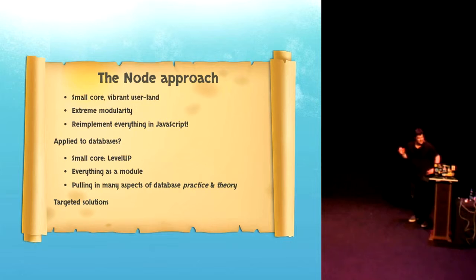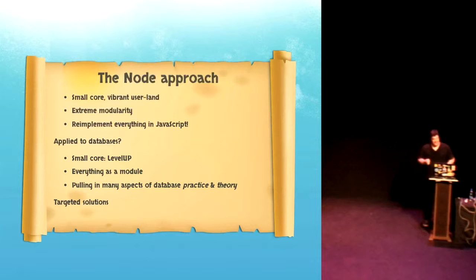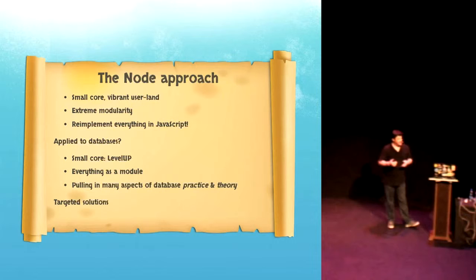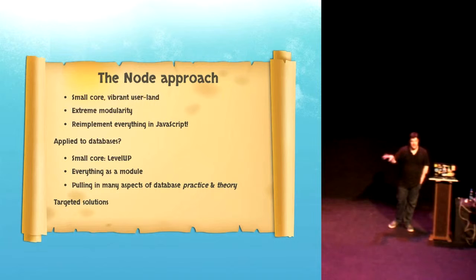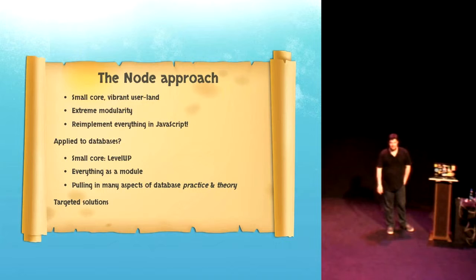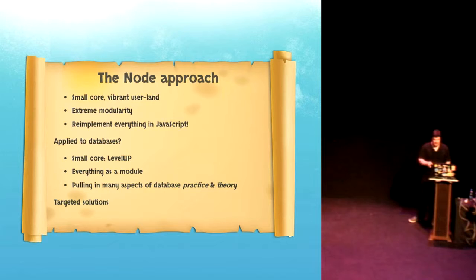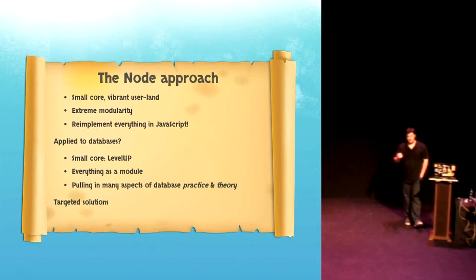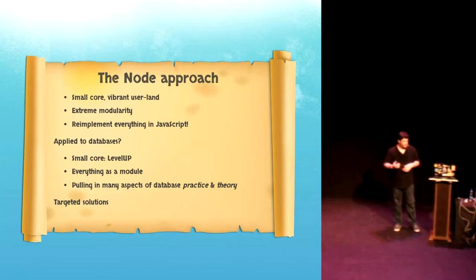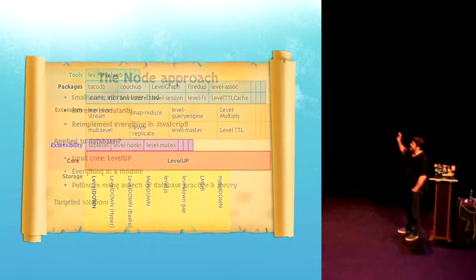So how do we apply that to databases? So we have a small core, and that small core at the moment is level up. It's a simple library. You can get it in NPM, and it's really simple. Everything is a module. So all of the functionality is a module, and you have a competing module ecosystem as well. So you've got modules that do the same thing, and they compete for attention on quality and all the rest of it. And then we're also this rewrite everything in JavaScript. We're pulling in database practice and theory into JavaScript land, into Node. So we're going out there. We've got people like Dominic who are doing these raids on Academe and going out there getting ideas from the database researchers and pulling them into Node, implementing them in Node so that we can use them. And then what we end up with is targeted solutions to specific problems. So we can take this package of libraries and build targeted solutions for what we're doing. So that's sort of what we're doing in Node.